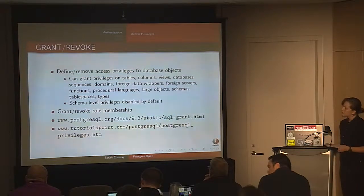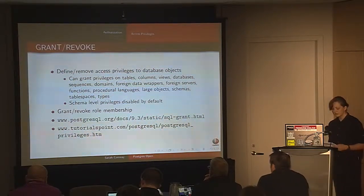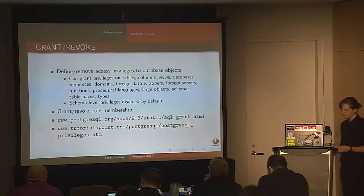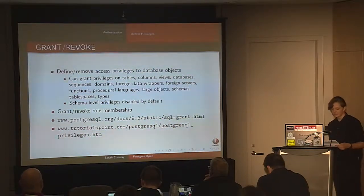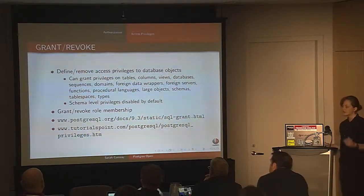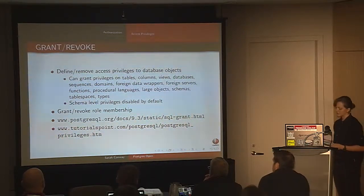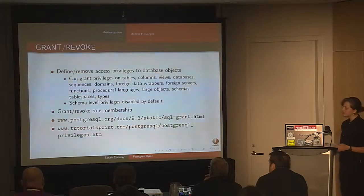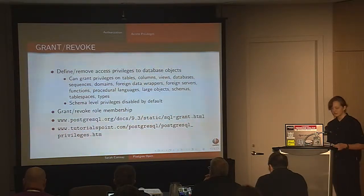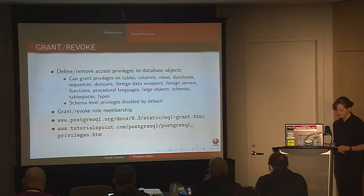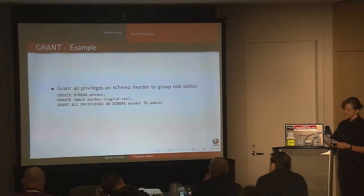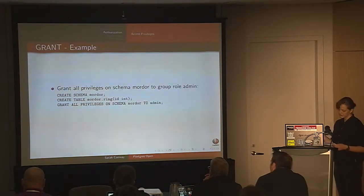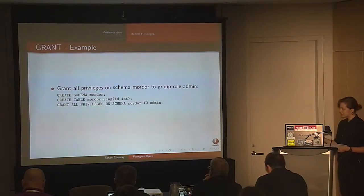GRANT and REVOKE define and remove access privileges to database objects, or grant and revoke role membership. You can grant privileges on tables, columns, views, databases, sequences, domains, foreign data wrappers, and so on — basically all database objects. You can also grant membership in a role. By default, schema-level privileges are disabled and have to be granted in addition to table-level permissions. An example: to grant all privileges on schema 'mortar' to group role admin — first create the schema, create table mortar.ring, grant all privileges on schema mortar to admin.